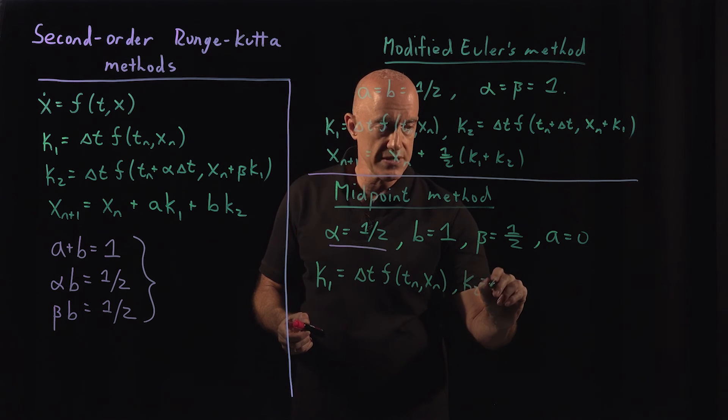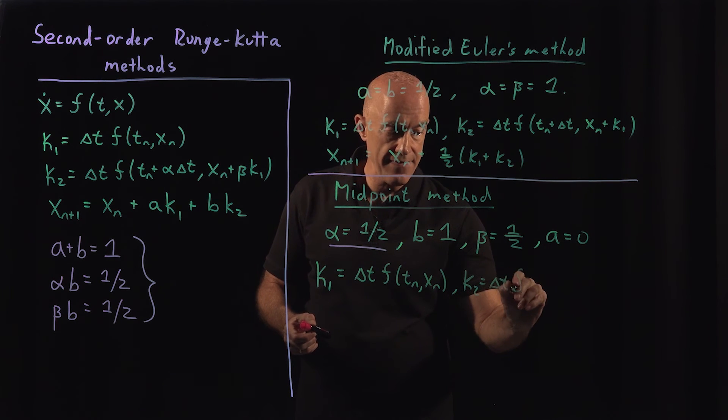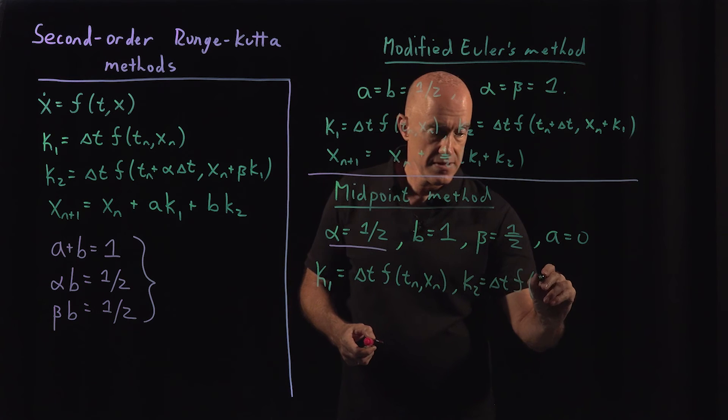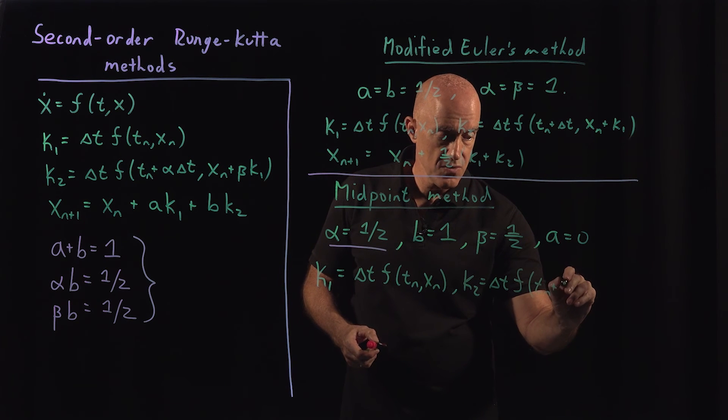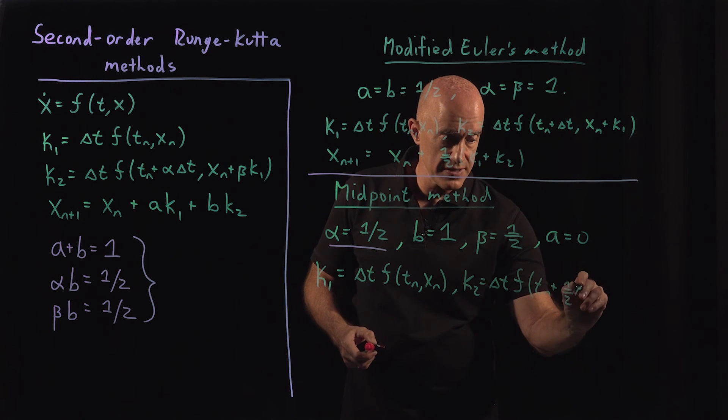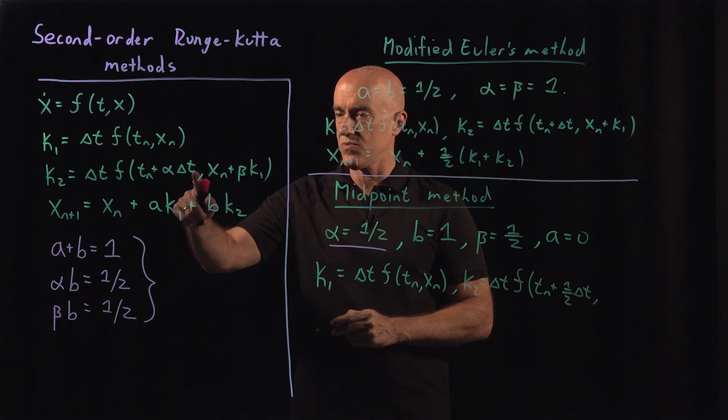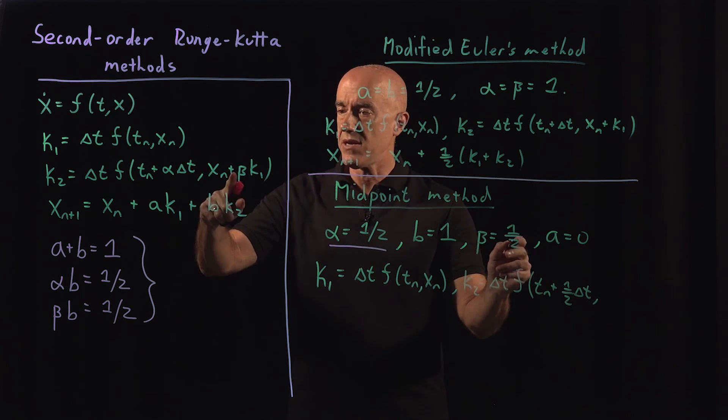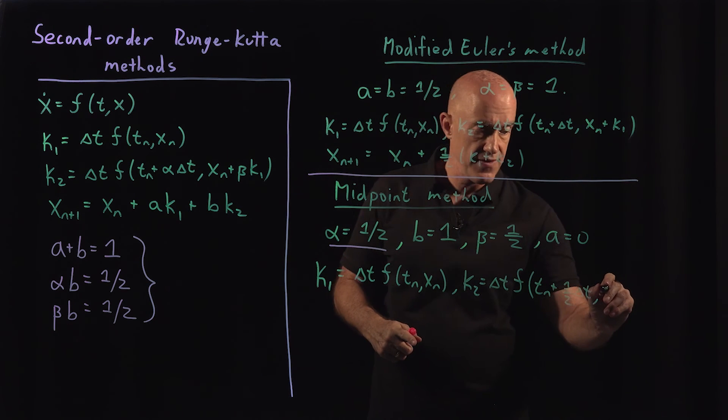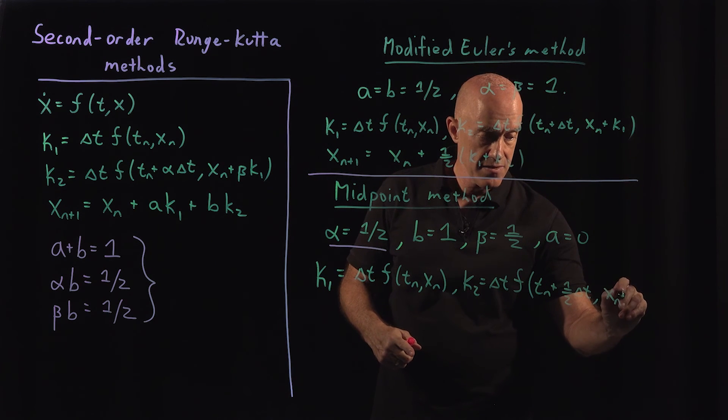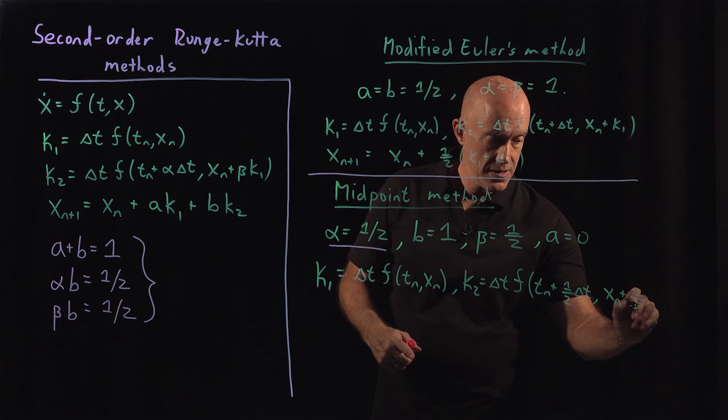k2 equals delta t f of (t_n plus 1/2 delta t), right? That was our choice of alpha equals 1/2. And then beta is also equal to 1/2, so we have x_n plus 1/2 k1, okay?